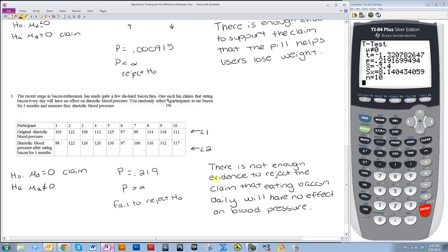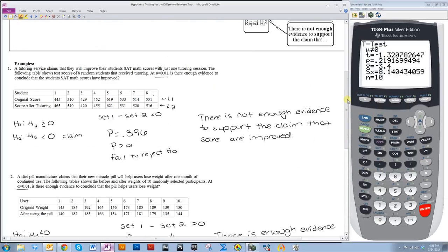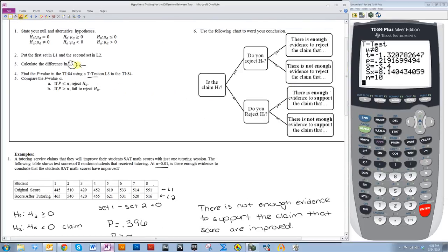So the big thing to make sure that you set up correctly is you set up your null and alternative hypotheses correctly, that you know if you're doing a less than one, or an equal to, or a greater than one. Also make sure that you only do a t-test on L3. You will never use z-test on these. It's always a t-test.